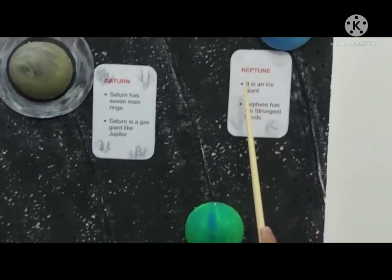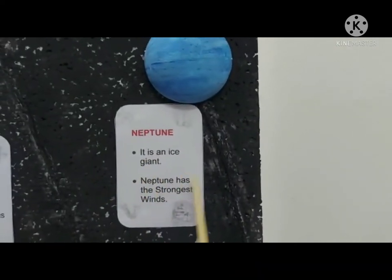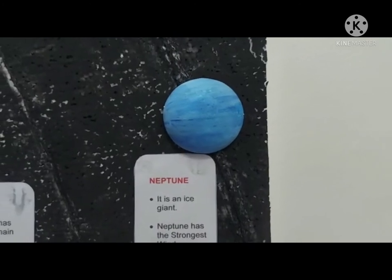Neptune. Neptune is an ice giant. Neptune has the strongest wind.